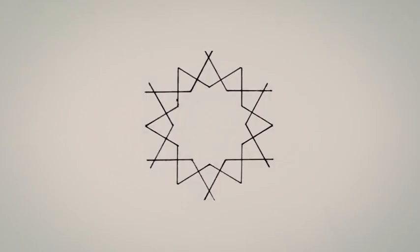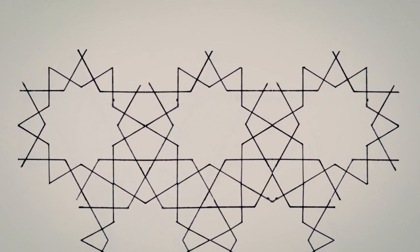Here's another sixfold pattern that has appeared across the centuries, and all over the Islamic world, including Marrakesh, Agra, Konya, and the Alhambra.